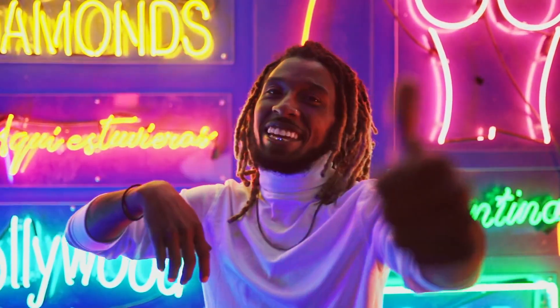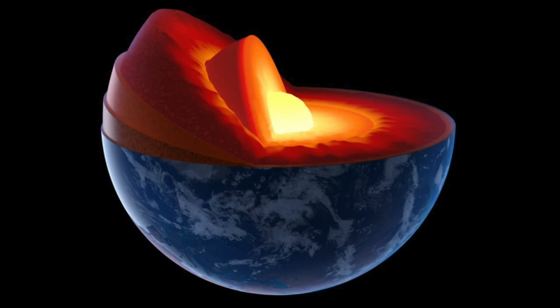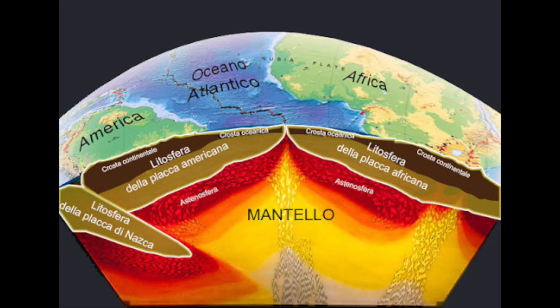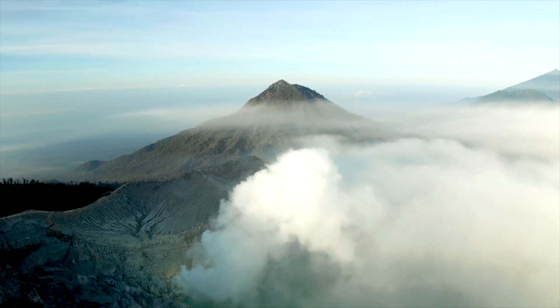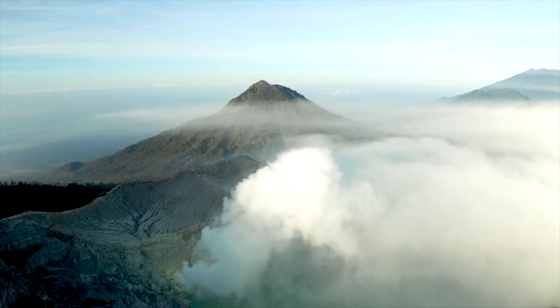Now that we have understood what tectonic plates are, we can ask what is there below. Under the tectonic plates we find the mantle. The mantle is a liquid envelope with very high viscosity. It represents about 84% of the volume of the entire planet and is essentially made of ultra-mafic rock, stable at high pressure and rich in iron and magnesium.